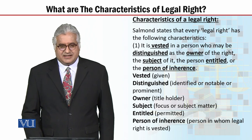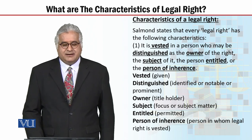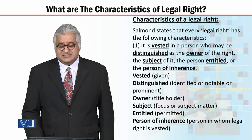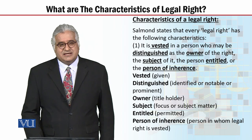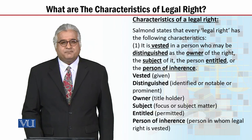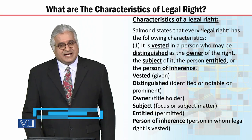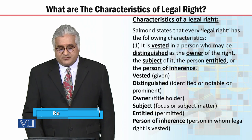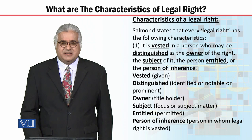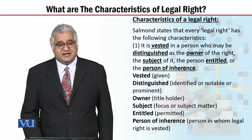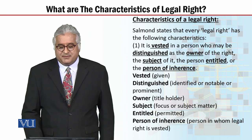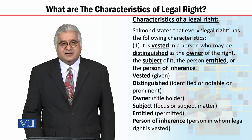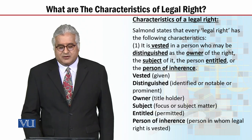Number one: the characteristic of the legal right according to Salmon is that the legal right is vested in a person who may be distinguished as the owner of the right. The subject of it — which the person holds the legal right — is called the subject of the right, the person entitled, and the person of inherence. The technical word 'vested' means given; 'distinguished' means identified, notable, or prominent.